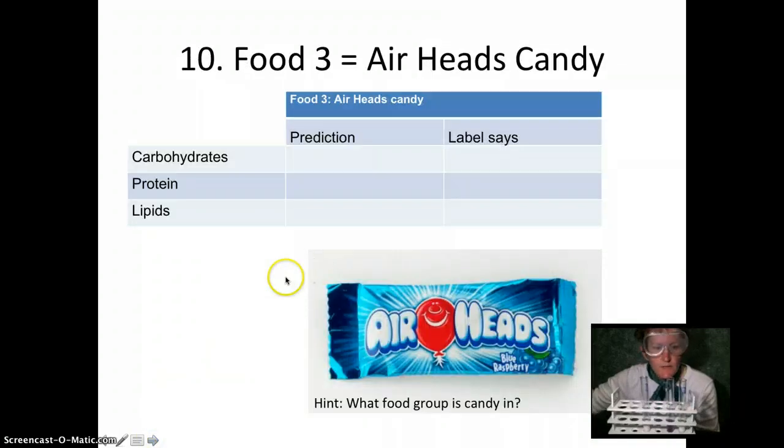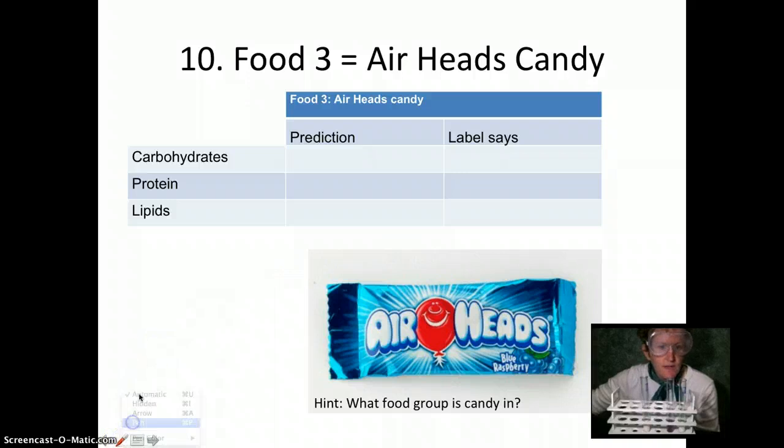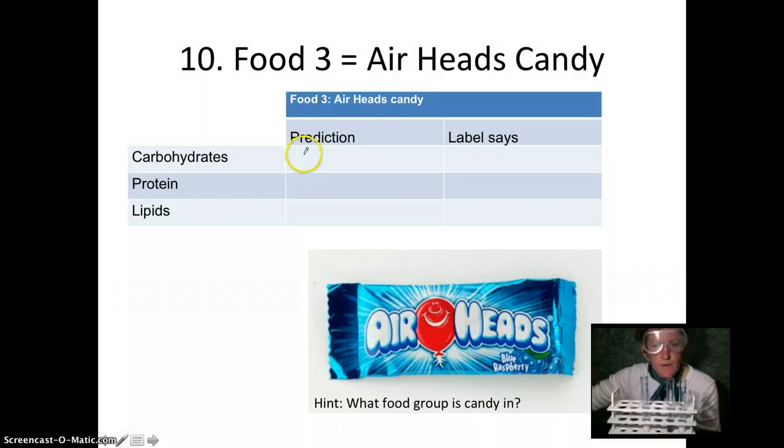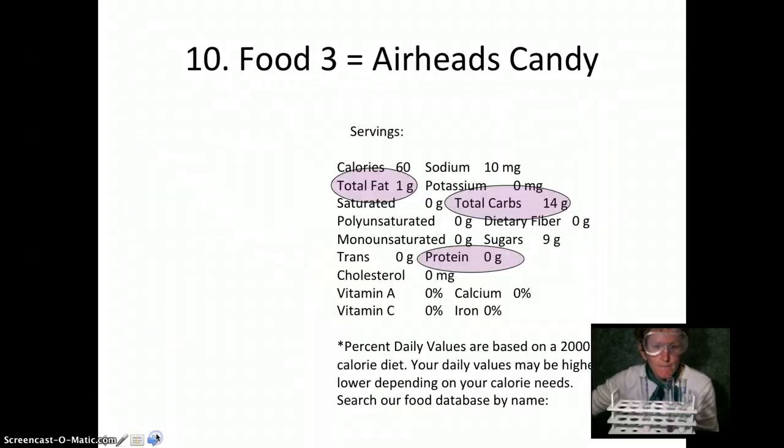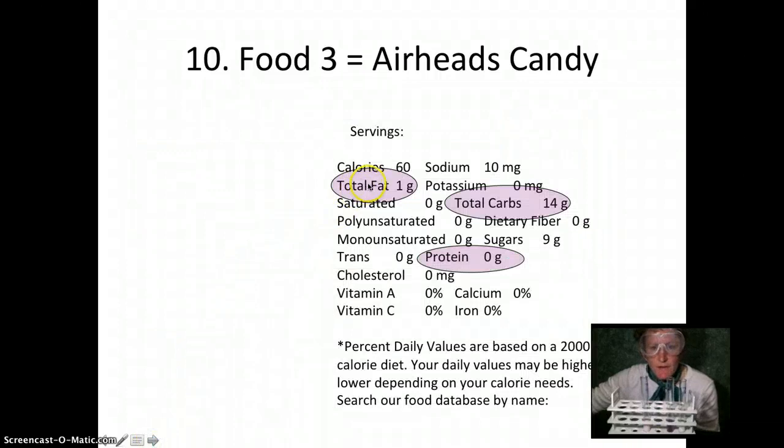Okay, write down your predictions for food 3. This is Airheads candy. Now remember, carbohydrates include sugars. Do you think there'll be sugar in candy? How about protein in candy? Do you think there'll be fat in Airheads? Do your best, write it down, pause the video. Turns out Airheads do have fat in them. They also have lots of carbohydrates. Even though it's a tiny piece of candy, it's got lots of sugar, so there are lots of carbohydrates, just no starch and no protein.